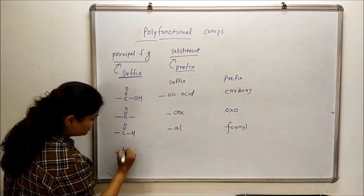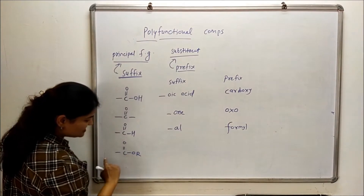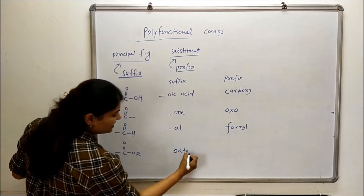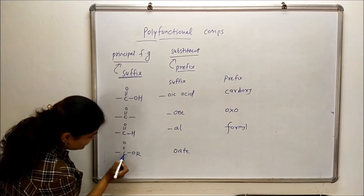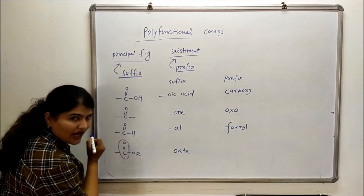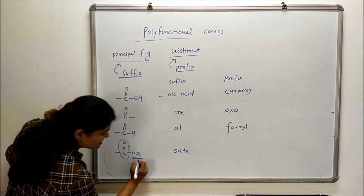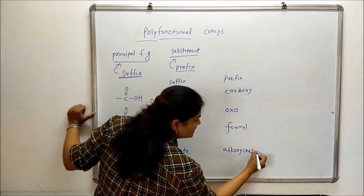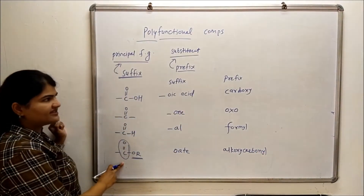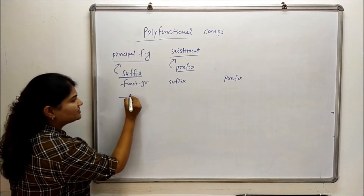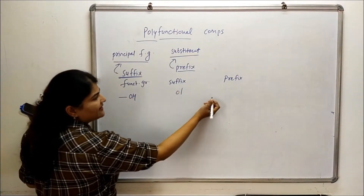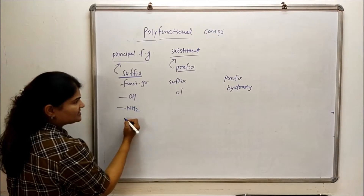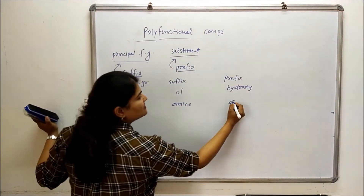For esters, we use the suffix -oate, and the prefix will be alkoxycarbonyl — where the C=O group is called carbonyl and the OR group is called alkoxy, so alkoxycarbonyl is the prefix for ester. For alcohol, the suffix will be -ol and the prefix will be hydroxy. For amines, the suffix will be -amine but the prefix will be amino.